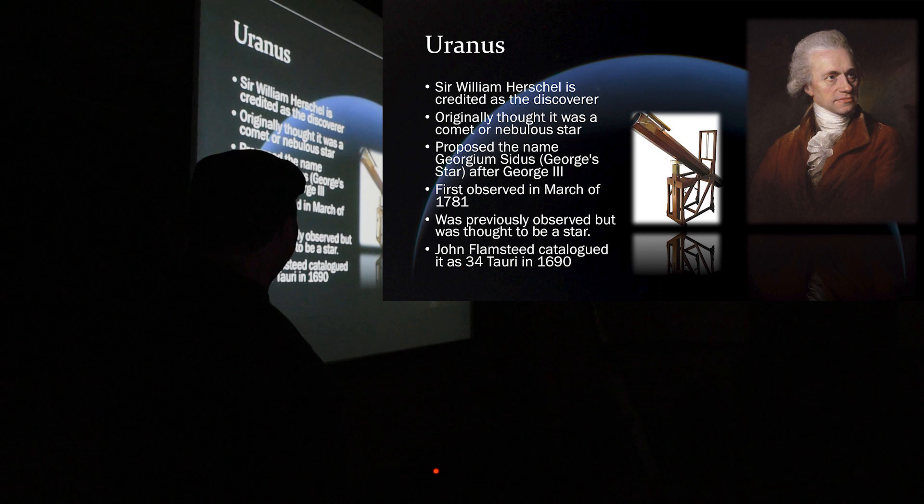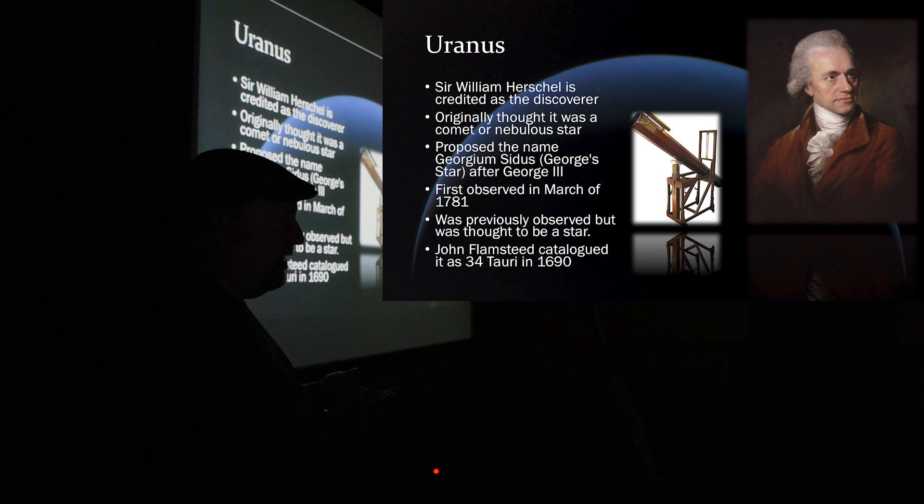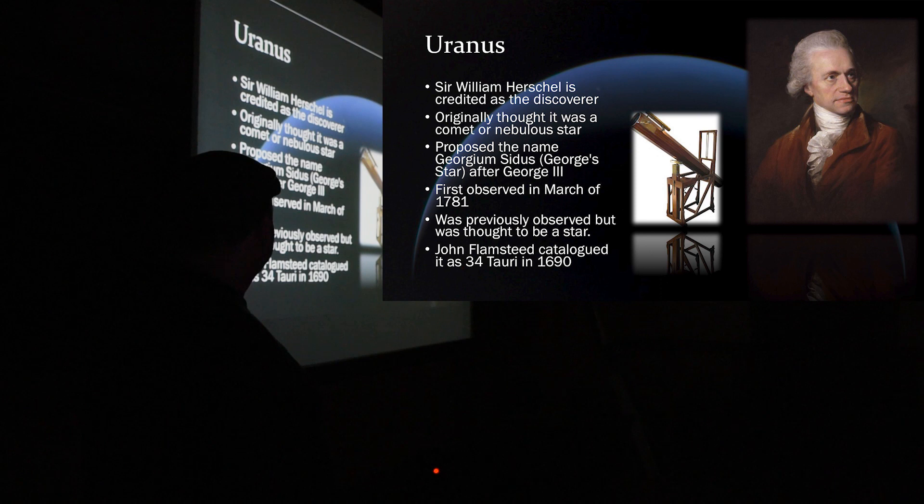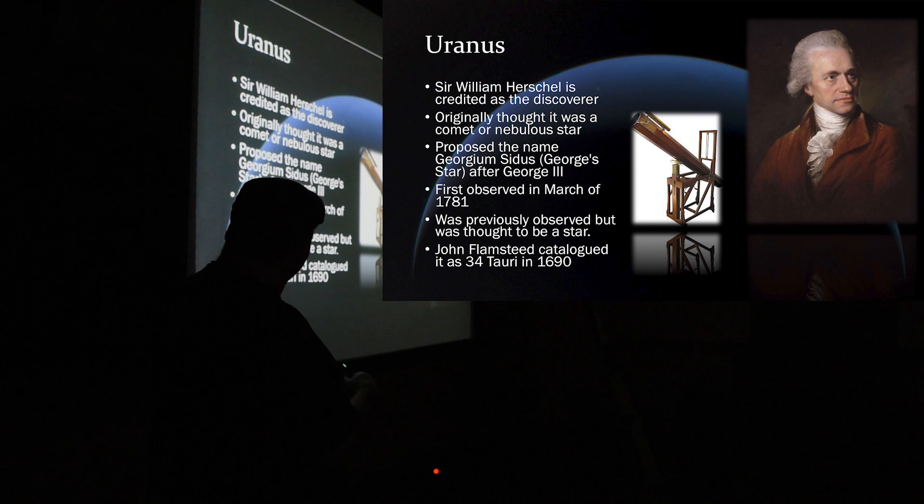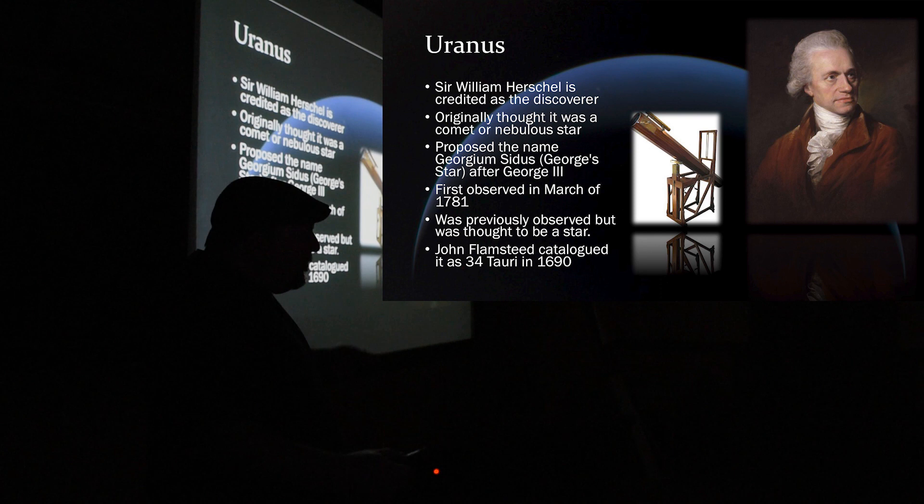Now, when Herschel was looking at it, he was looking at it, and he was like, this kind of looks different. He thought it was a comet originally, but it wasn't moving as fast. And also, he's like, oh, maybe it's a nebulous star. But he finally, they finally determined that it was a planet, and he's credited as the discoverer of it. But he actually wanted to call it Georgium Sidus, George's star after George III, because, you know, George III was paying his salary, so he wanted to honor his boss by naming the planet after him.